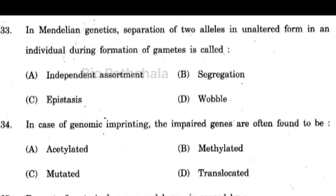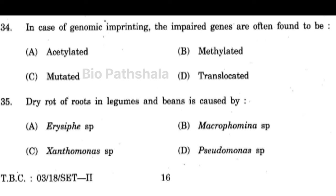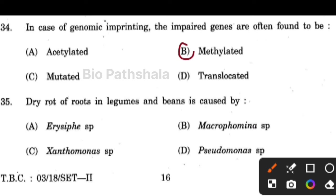Next question: in case of genomic imprinting, the imprinted genes are often found to be methylated. Next question: dry rot of roots in legumes and beans is caused by option number B — Macrophomina species.